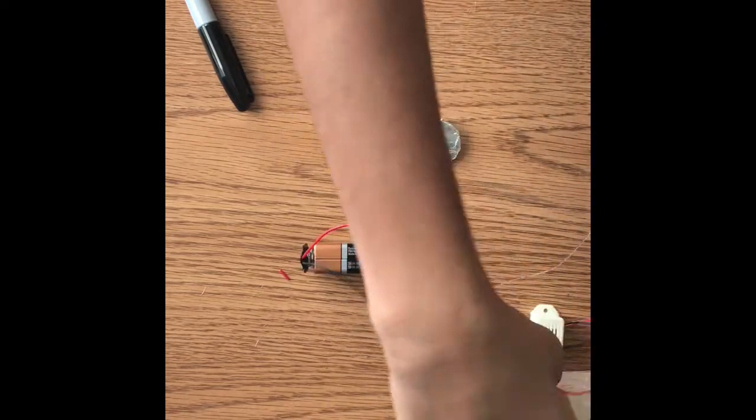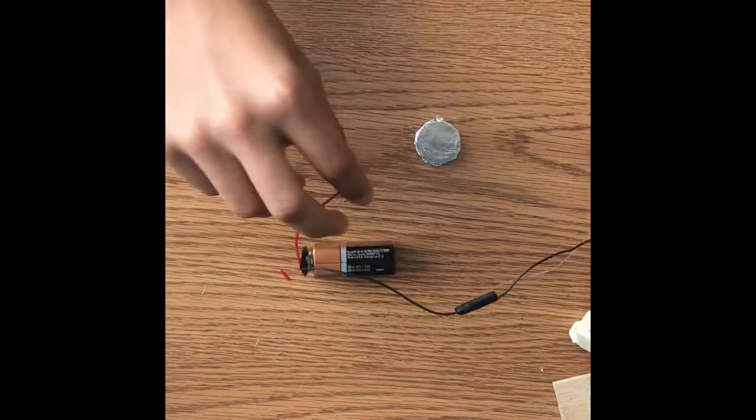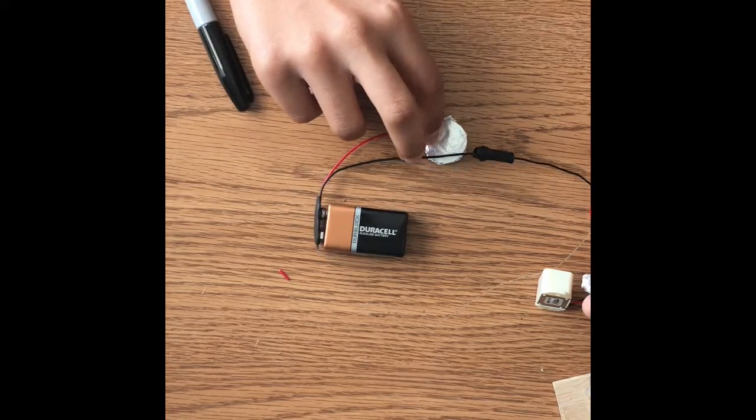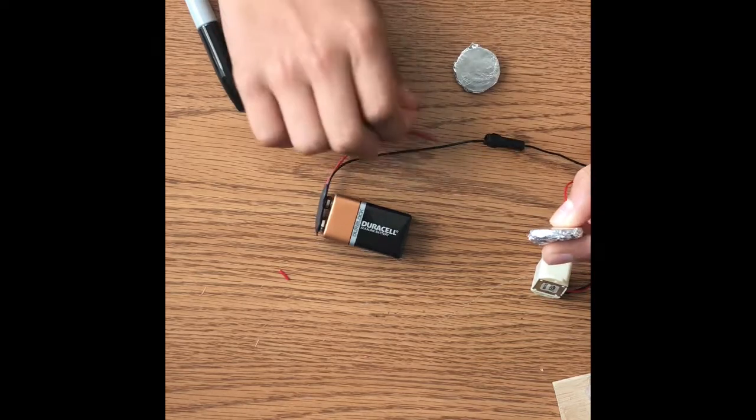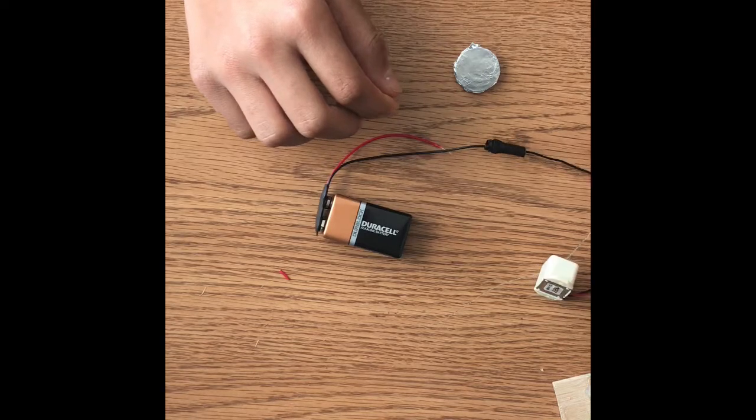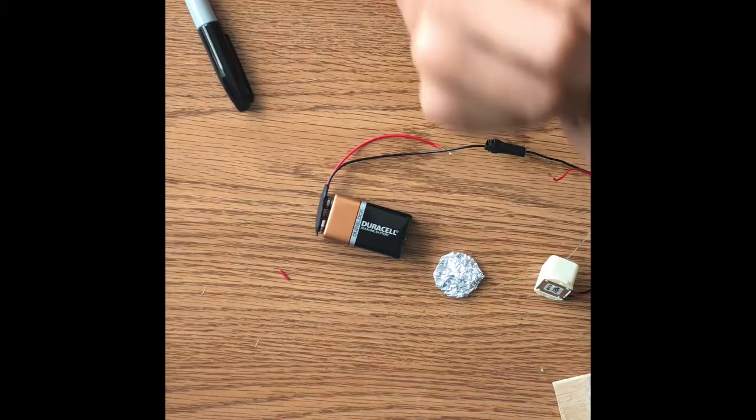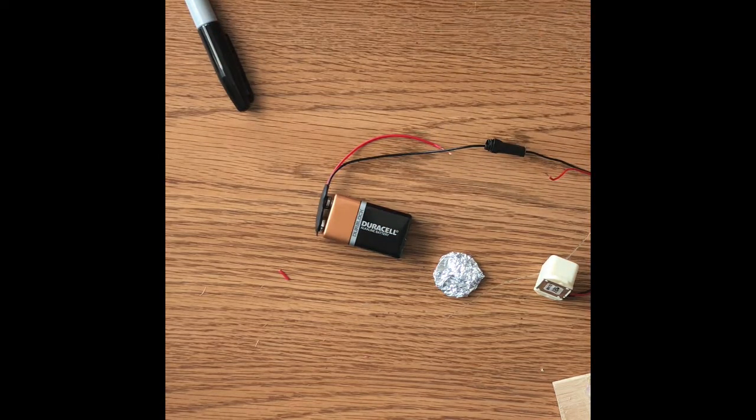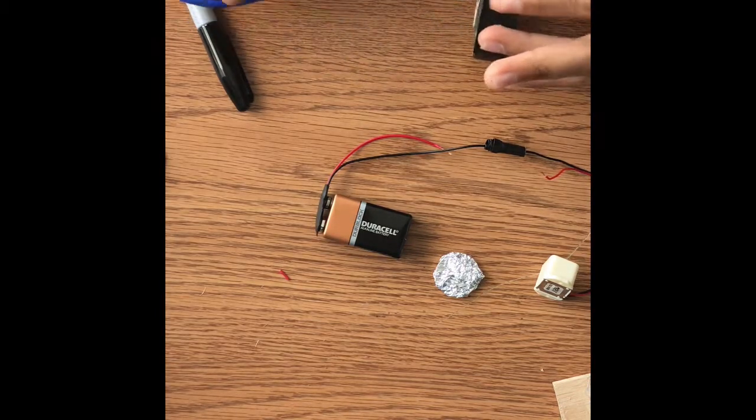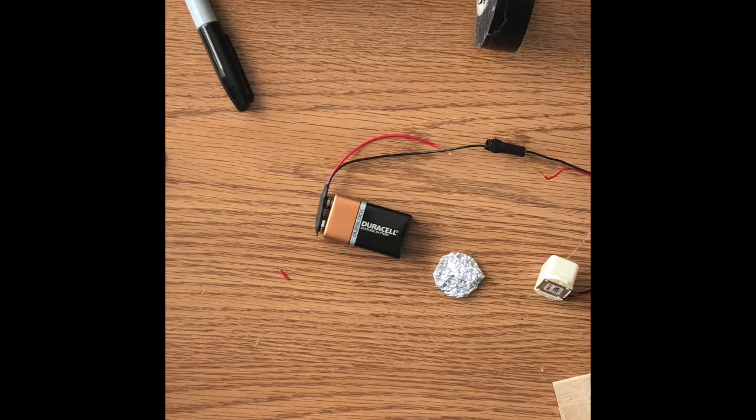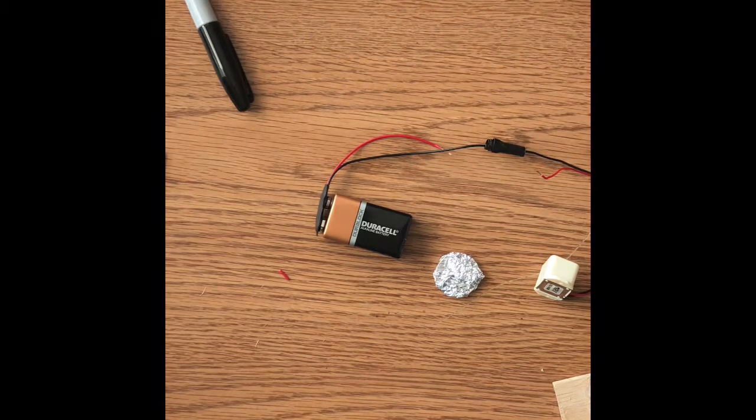What we're going to be doing right now is we're going to be connecting this to the foil and the battery components' wire to the foil as well. And then now we're going to see if the foil translates the electricity through itself to the other magnet, and we will be seeing if all of this was for nothing or if it's actually going to work.